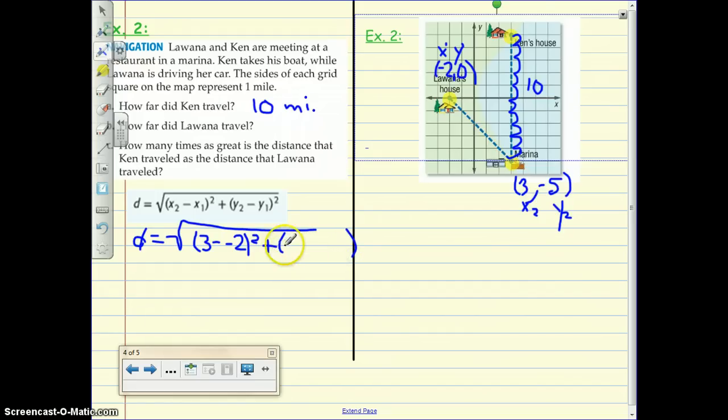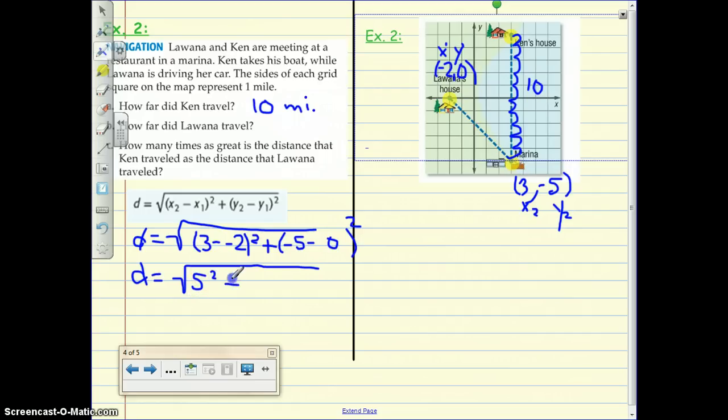Plus y2 minus y1. So y2 is negative 5 minus 0, y1. Now we can simplify and find our distance. So d equals 3 minus a negative 3 is like 3 plus 3, which is 5. Don't forget that it's squared. Negative 5 minus 0 is negative 5.